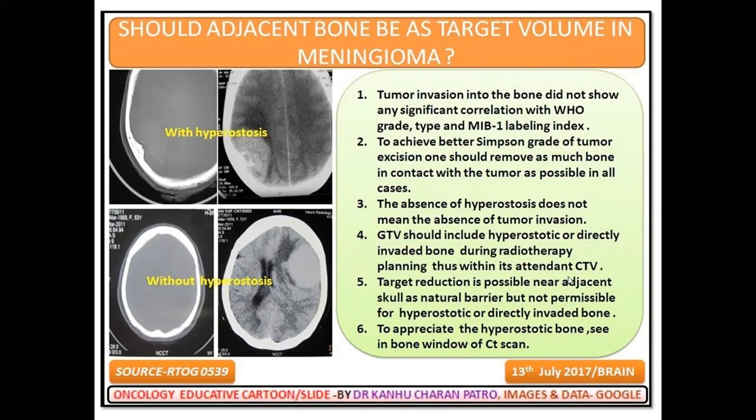GTV should include hyperostatic or directly involved bone during radiotherapy planning, within the afternoon and CTB. Target reduction is permissible near adjacent skull as a natural barrier, but not permissible for hyperostasis or directly involved bone. To appreciate hyperostatic bone, you have to go through the bone window of the CT scan.